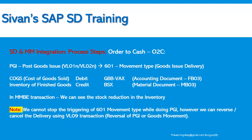The process step again in the order-to-cash: when we click on post goods issue, movement type 601 will be triggered — that is goods issue delivery. The cost of goods sold account will be debited, and the inventory of finished goods account is credited. The accounting document and material document can both be seen in the MB03 transaction. We also notice that the stock reduction happens in the inventory, and all SD consultants or OTC consultants will have access to the MMBE transaction, though it belongs to MM — materials management.